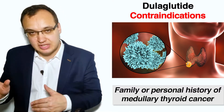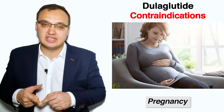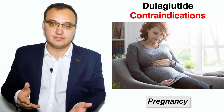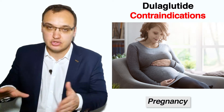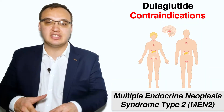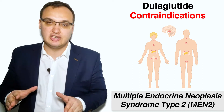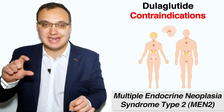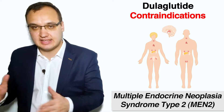Personal history means did the patient have medullary thyroid cancer in his life? Family history of medullary thyroid cancer would refer to some of his family members having this type of cancer. And if yes, then dulaglutide is not advised. The next contraindication is whether the patient is pregnant or breastfeeding — if so, don't give it. Another contraindication is whether the patient had multiple endocrine neoplasia syndrome type 2, or MEN2 — if so, it is not advised.